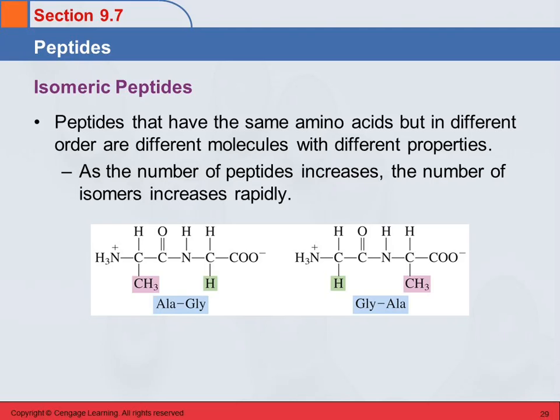If you have different amino acids, no repeats, the number of possible isomers is n factorial. So if you have five, it's one times two times three times four times five. It gets pretty complicated. These isomeric peptides have different properties, and they are definitely different molecules, and so we have to pay attention and get them in the correct order.